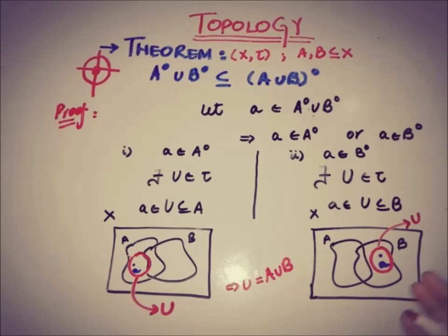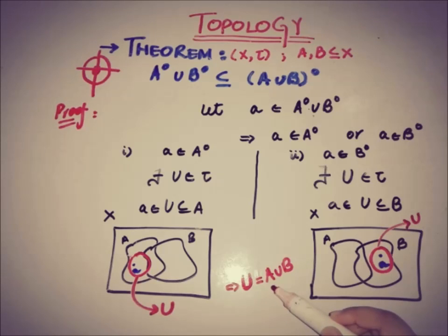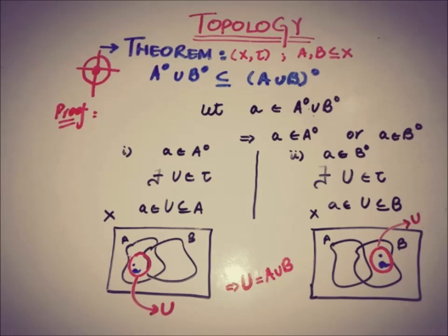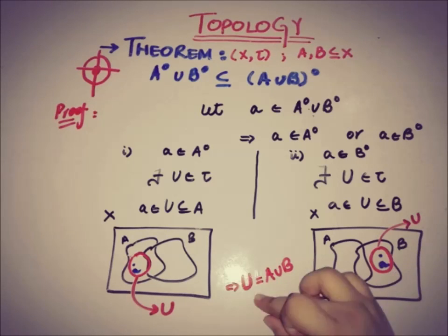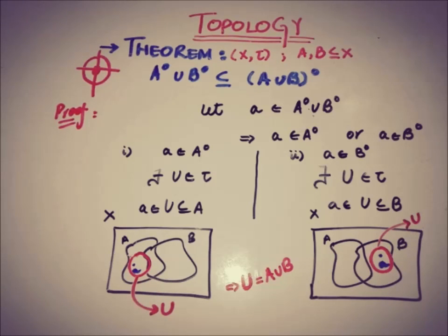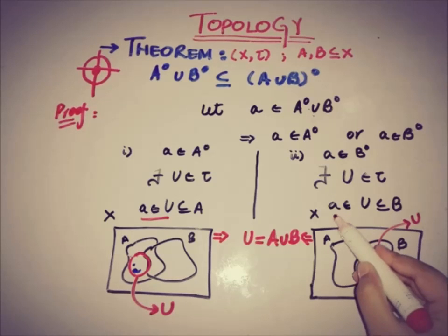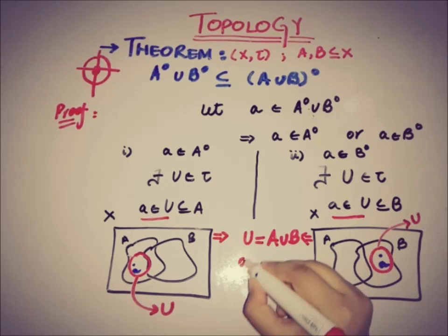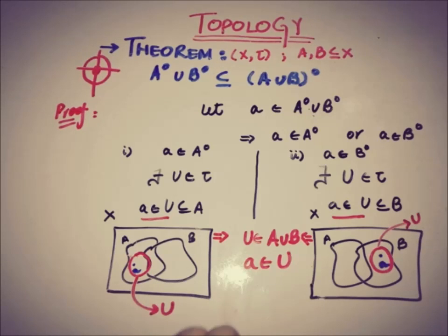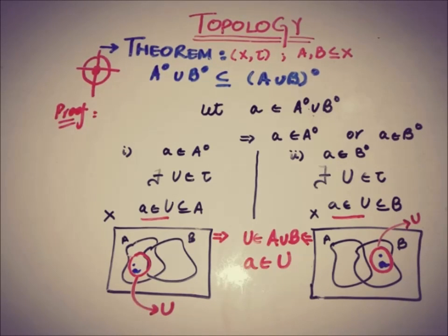Regardless of whether U is in A or in B, we are interested in the union of A and B. So that open set U is a part of A∪B. Regardless of whether point a belongs to A or to B, the open set U of that point a will always be an open set of A∪B, because U is a subset of A∪B in both cases. We also know that a belongs to U in both cases. So by using both pieces of information — U is a subset of A∪B and a is a member of U — we can conclude that a belongs to (A∪B).